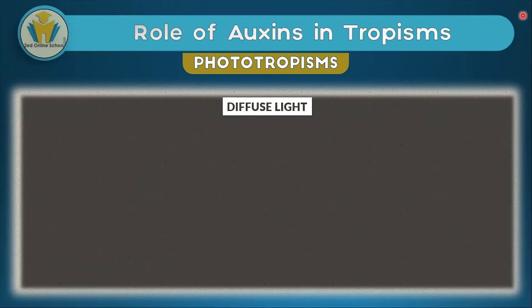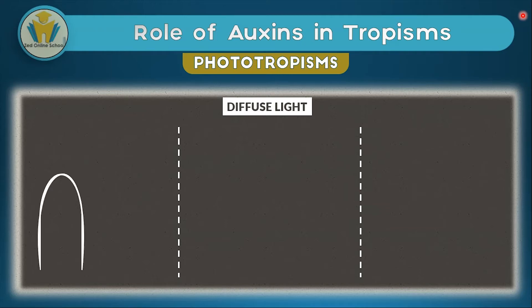We're first going to look at the role of auxins in phototropism. There are two areas to cover: first, a set of three experiments which prove that auxins play a part in the growth of shoots. Mainly the roots are under the soil, so when talking about phototropism, only the shoots are considered. If we have a growing shoot, auxins will be at the tip of this growing shoot.